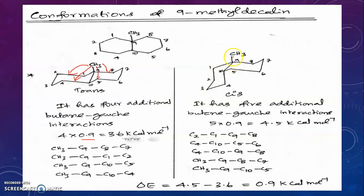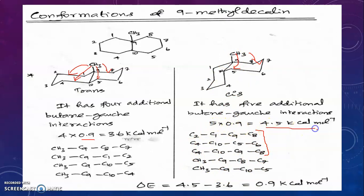When a methyl group is introduced at position 9 in cis-decalin to give cis-9-methyldecalin, there are 5 additional butane-gauche interactions. Three already exist in cis-decalin: C2–C1–C9–C8, C4–C10–C5–C6, and C4–C10–C9–C8. Introduction of the methyl group adds two more: CH3–C9–C8–C7 and CH3–C9–C10–C5. So cis-9-methyldecalin has 5 × 0.9 = 4.5 kcal/mol of additional energy.